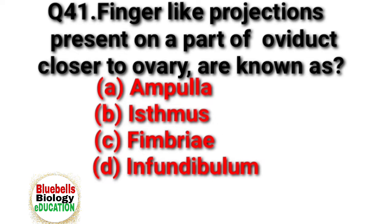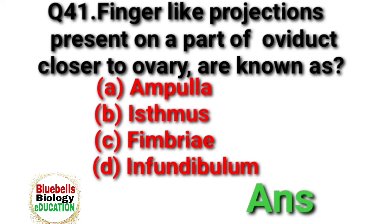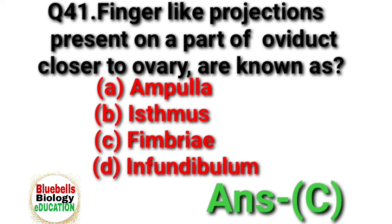Question 41. Finger-like projections present on a part of oviduct closer to ovary are known as. Option A: ampulla. B: isthmus. C: fimbria. D: infundibulum. Answer is C.